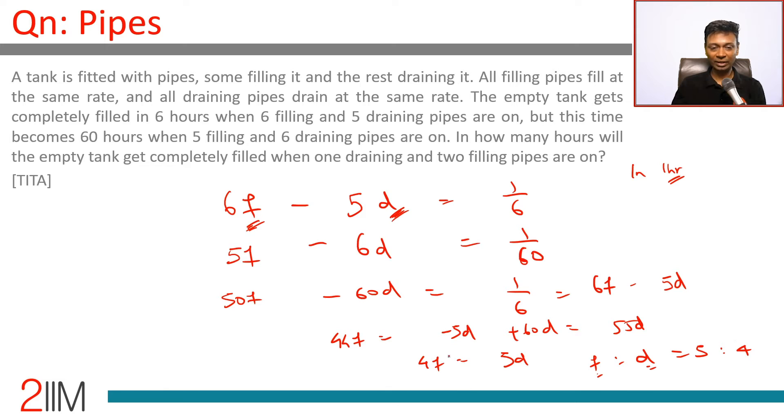Once you have that, you can substitute. 4f equal to 5d. We know 6f minus 5d is 1/6, or 12f minus 10d equals 1/3, or 5d equals 1/3, so d is 1/15. A drain pipe drains it in 15 hours. A fill pipe will fill it in 12 hours.